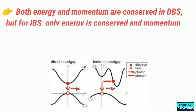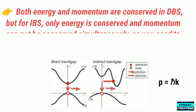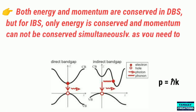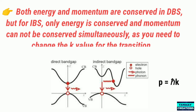For indirect band gap semiconductors, energy is conserved but momentum cannot be conserved simultaneously, as you need to change the K value for the transition.